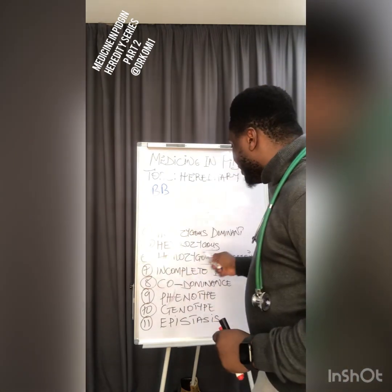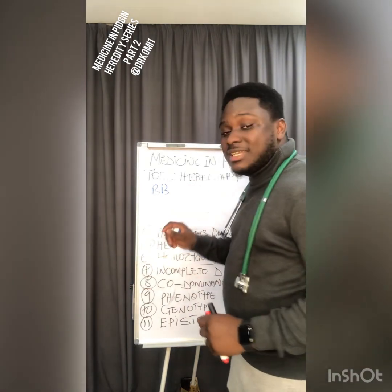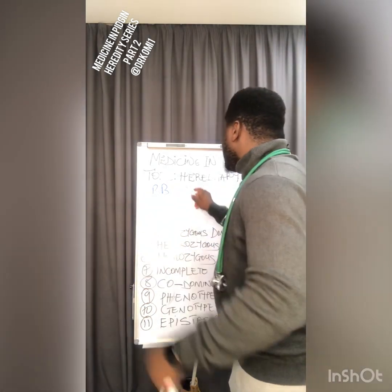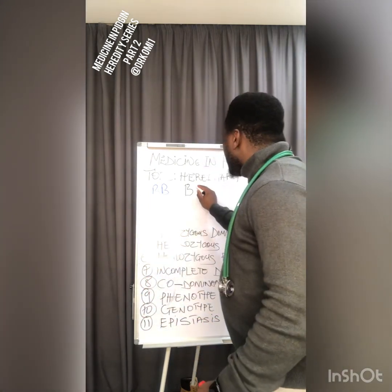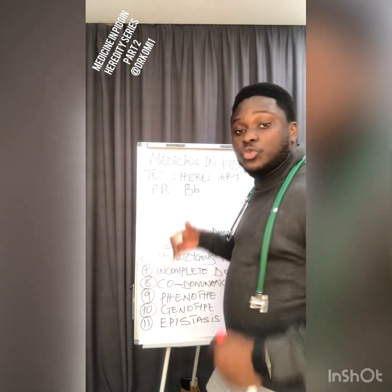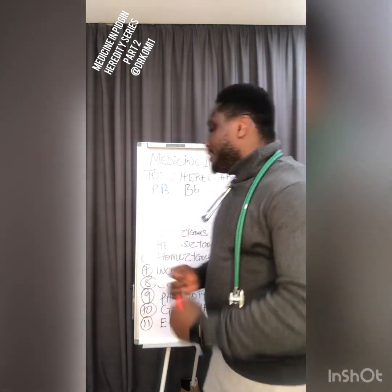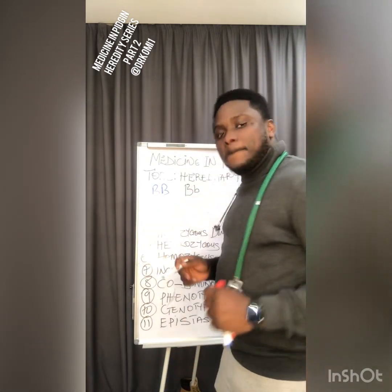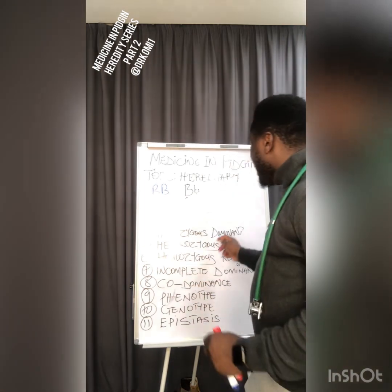The next term is heterozygous. Heterozygous means you carry one capital letter — one dominant allele — and one small letter — one recessive allele. For example, you get one dominant gene for brown eyes from your mama, and one recessive gene for blue eyes from your papa. The big letter is dominant, the small letter is recessive — that combination is heterozygous.